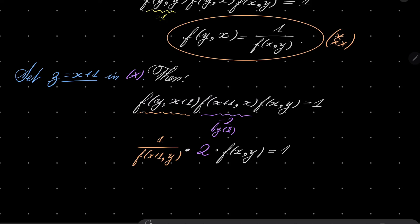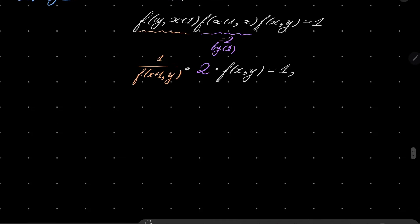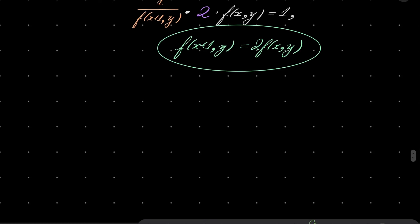equals 1. And let's put this orange expression on the other side and we will get the following recursion: f(x+1,y) equals 2 f(x,y). And now, notice that the second argument is the same. And every time we increase the first argument by 1, the value doubles. So by easy induction, I will leave the details to you. The induction is really easy.